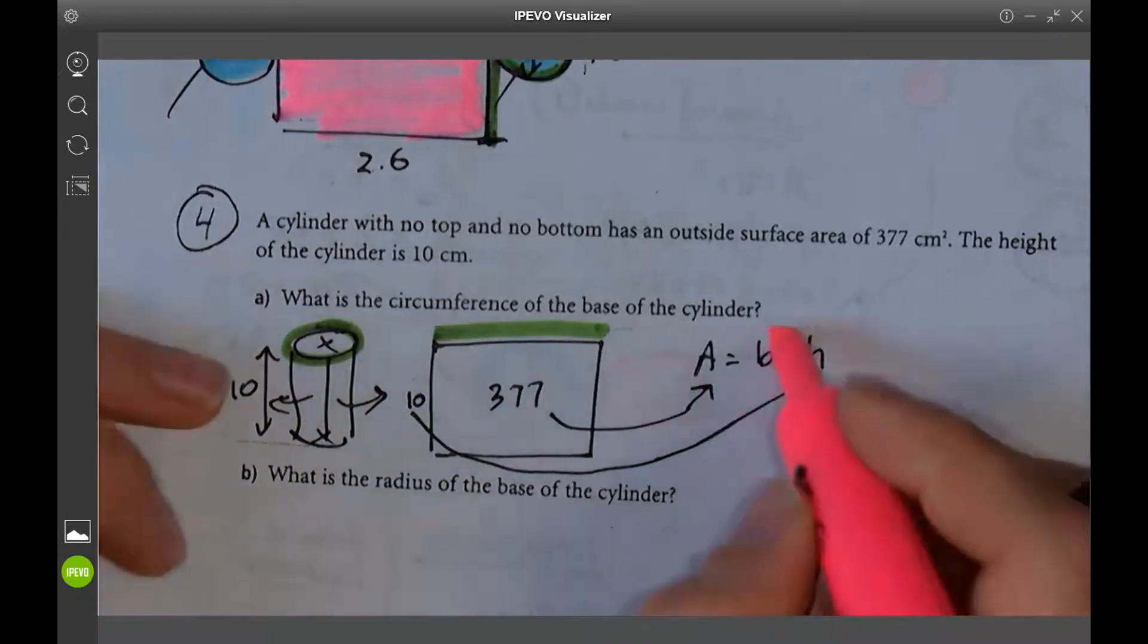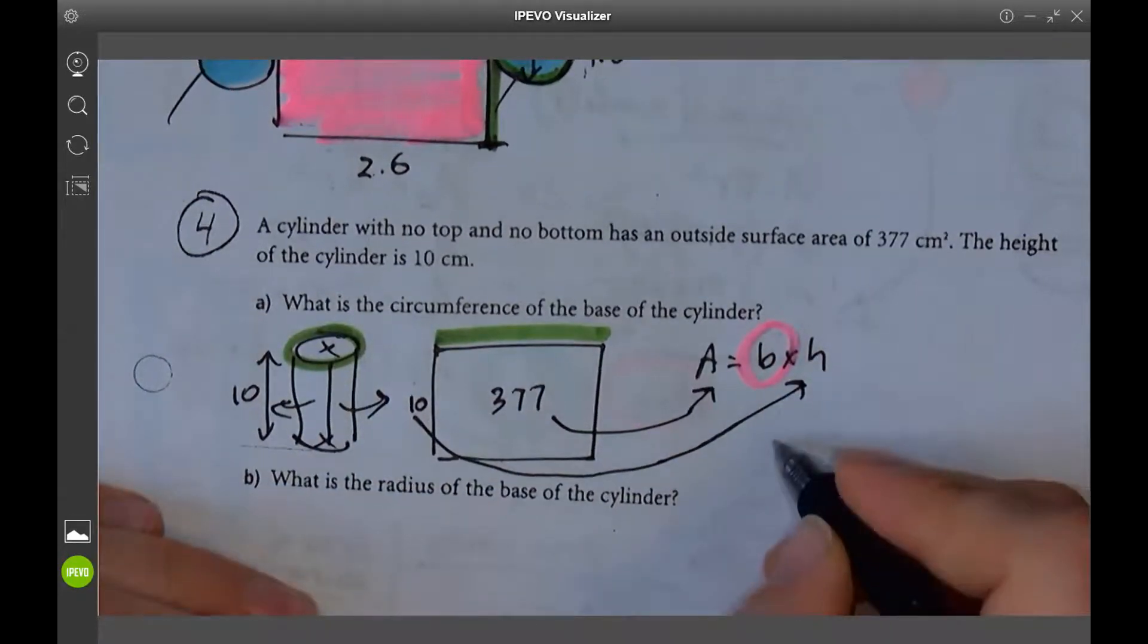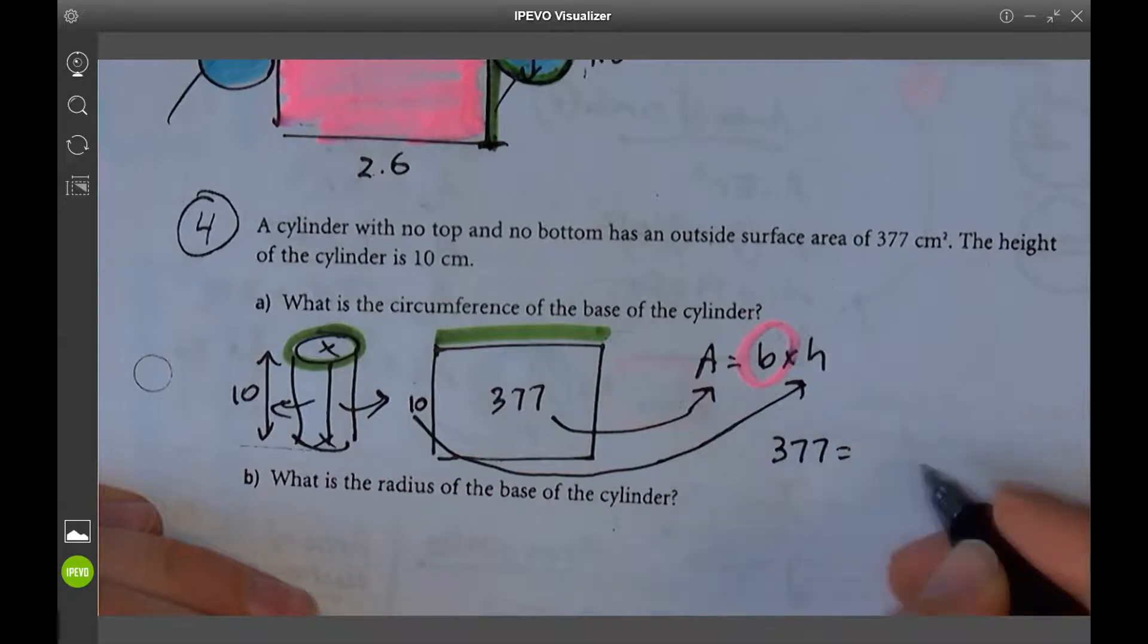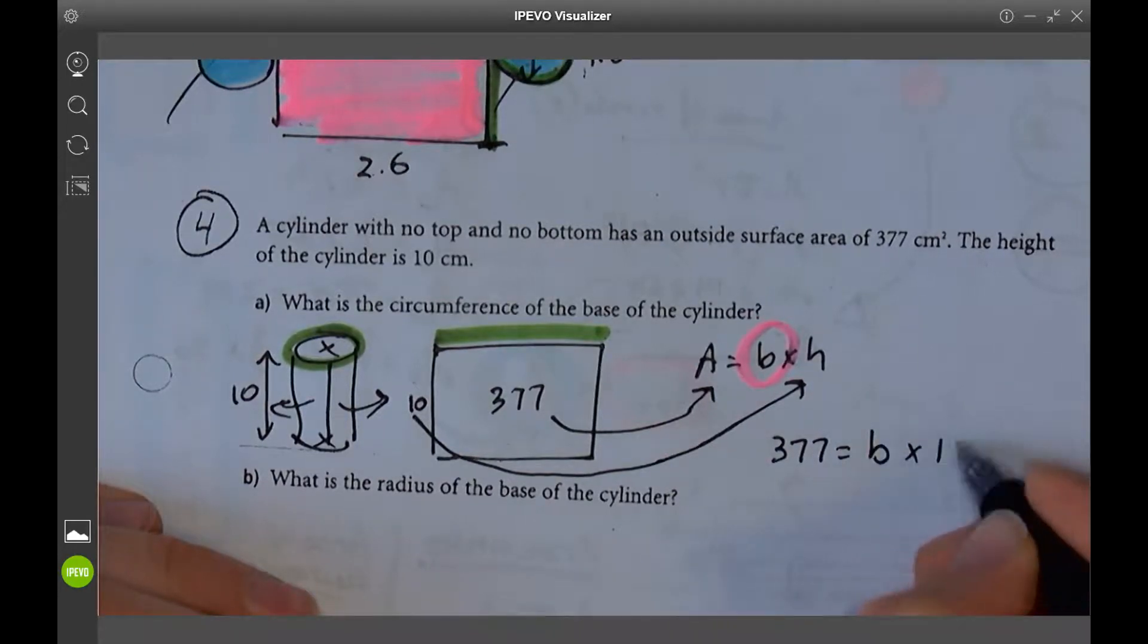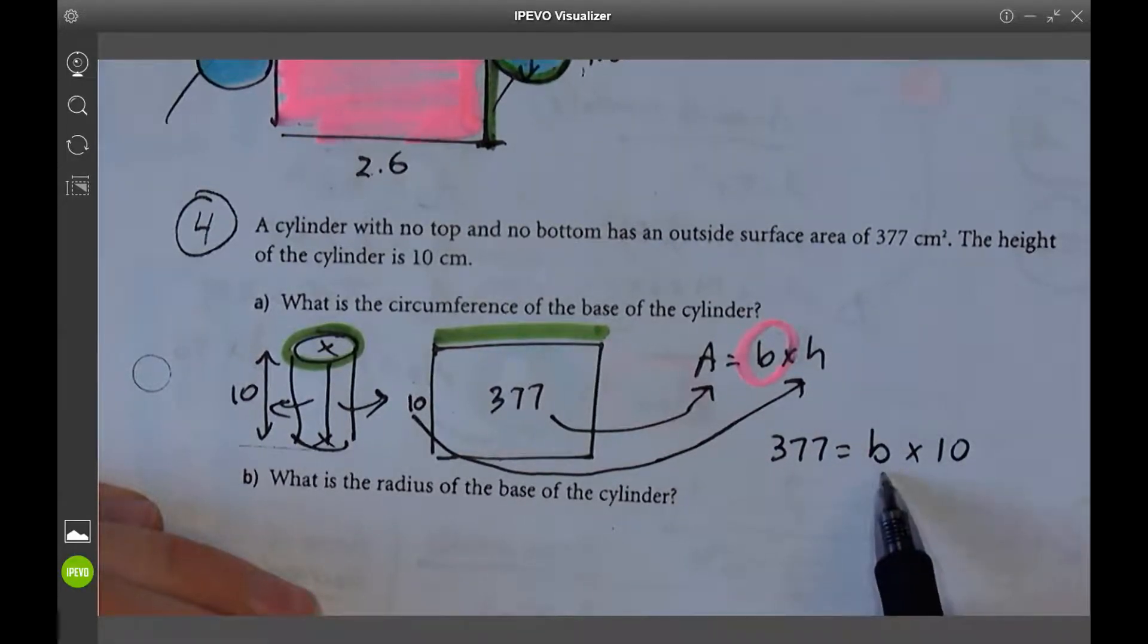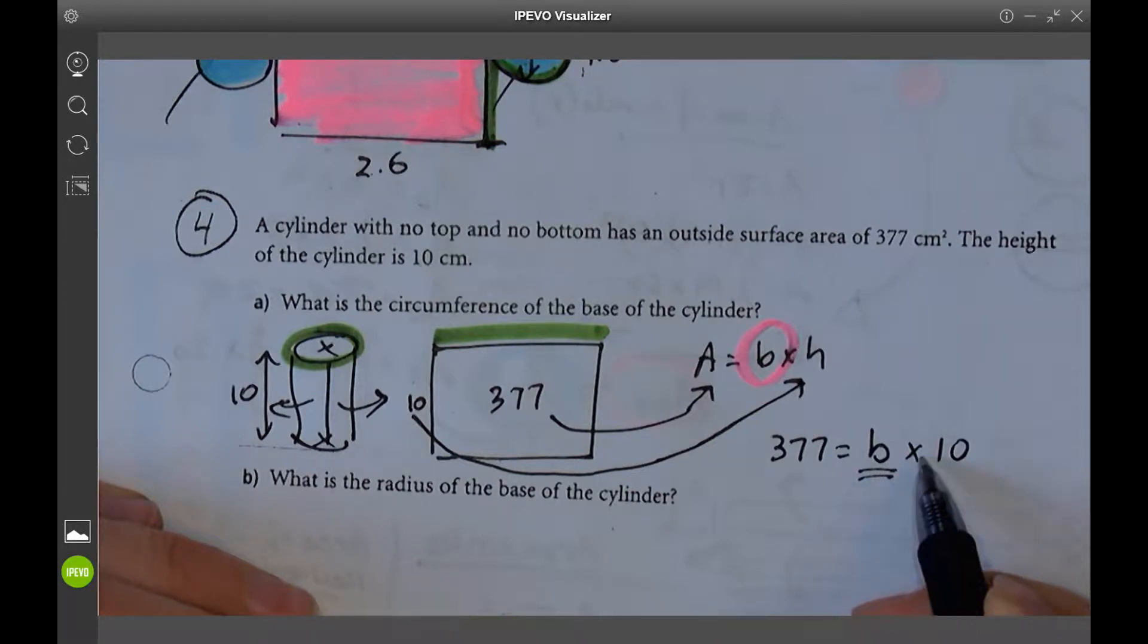Well, this is an algebra question, ladies and gentlemen. Algebra question 377 equals B times 10. How do I solve for B? I need to get B by itself using math. This is B times 10.